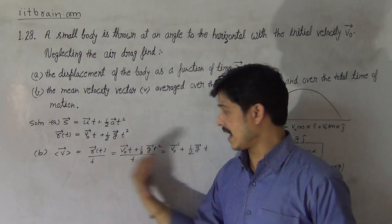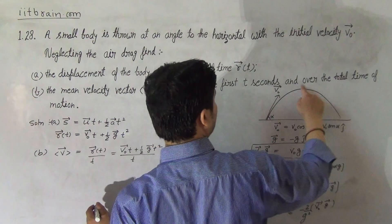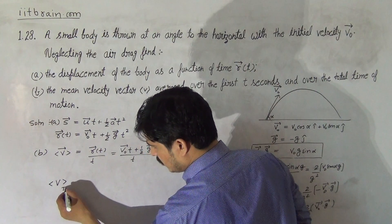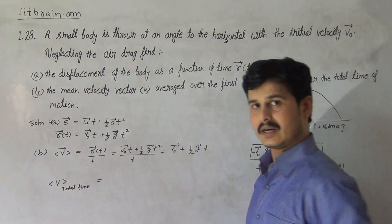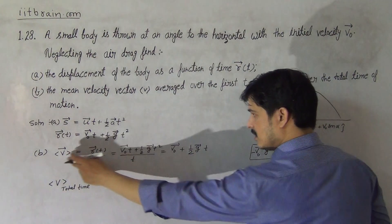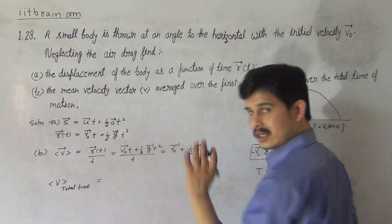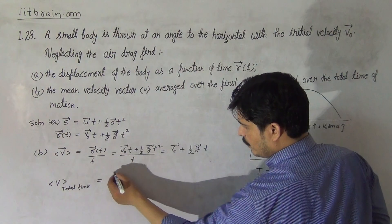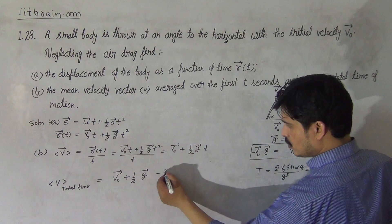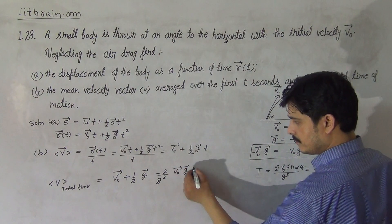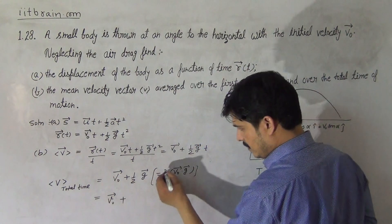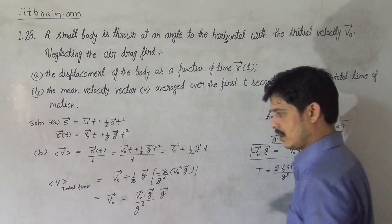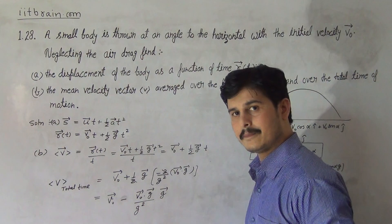The total average velocity over the whole time of motion is total displacement divided by total time T. Substituting the value of T = -2(v₀·g)/g² into the mean velocity expression v₀ + ½g·t, the total time average becomes v₀ + ½g·(-2(v₀·g)/g²), which simplifies to v₀ - (v₀·g / g²)·g. This is the mean velocity vector averaged over the total time of motion.